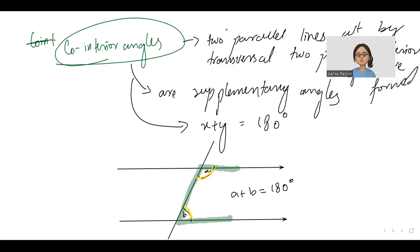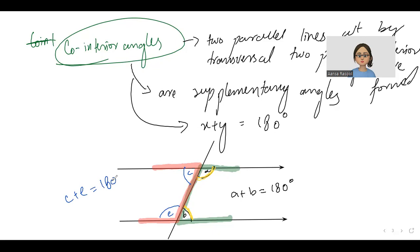Similarly, the angles at the corners of the other C-shape will also add up to give us 180 degrees. You can say that it's a C-shape. So the angles at the corners of C add up to give us 180 degrees. So they are basically co-interior angles. There are two pairs formed: A plus B is one pair and C plus C is another pair.